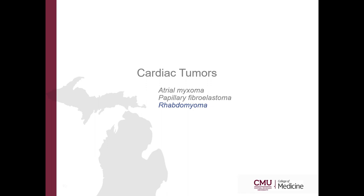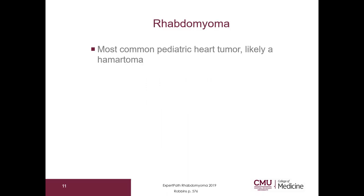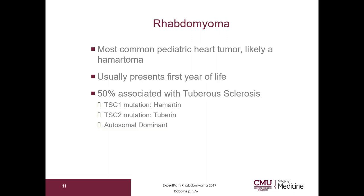Let's go on to rhabdomyoma. Rhabdomyoma is the most common pediatric heart tumor and is likely a hamartoma. It usually presents in the first year of life. 50% are associated with tuberous sclerosis. This can be due to TSC1 mutation, which is hamartin, or TSC2 mutation, which is tuberin. It is autosomal dominant. The prognosis is variable.